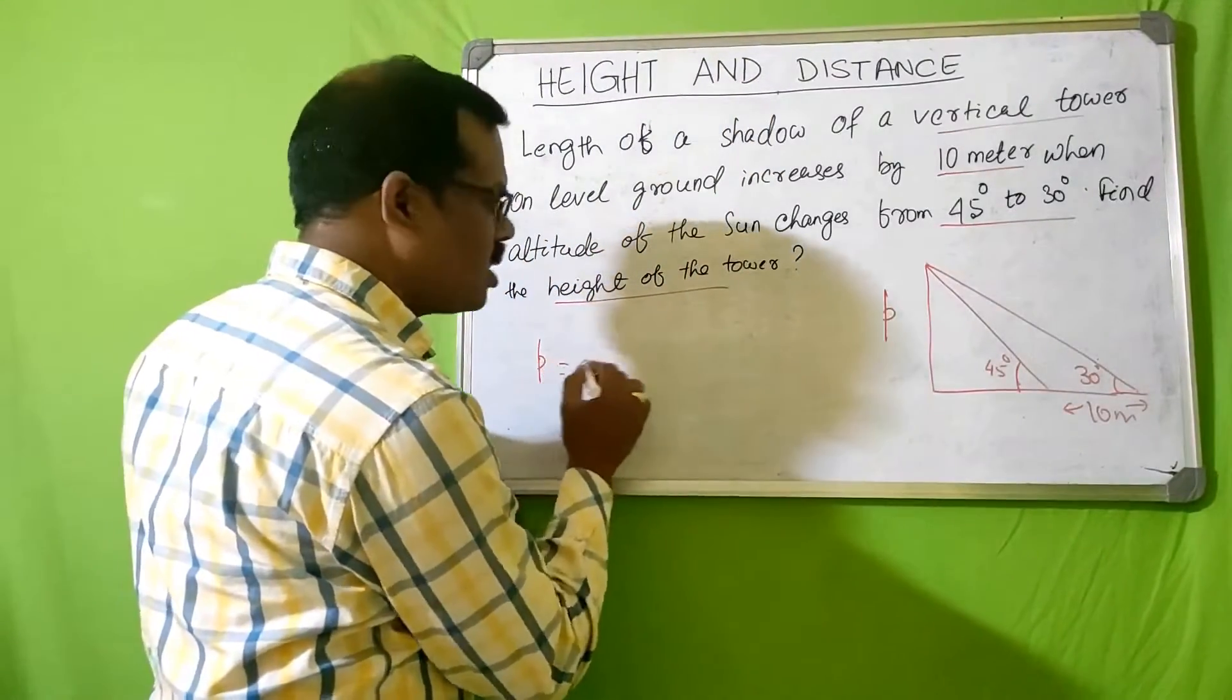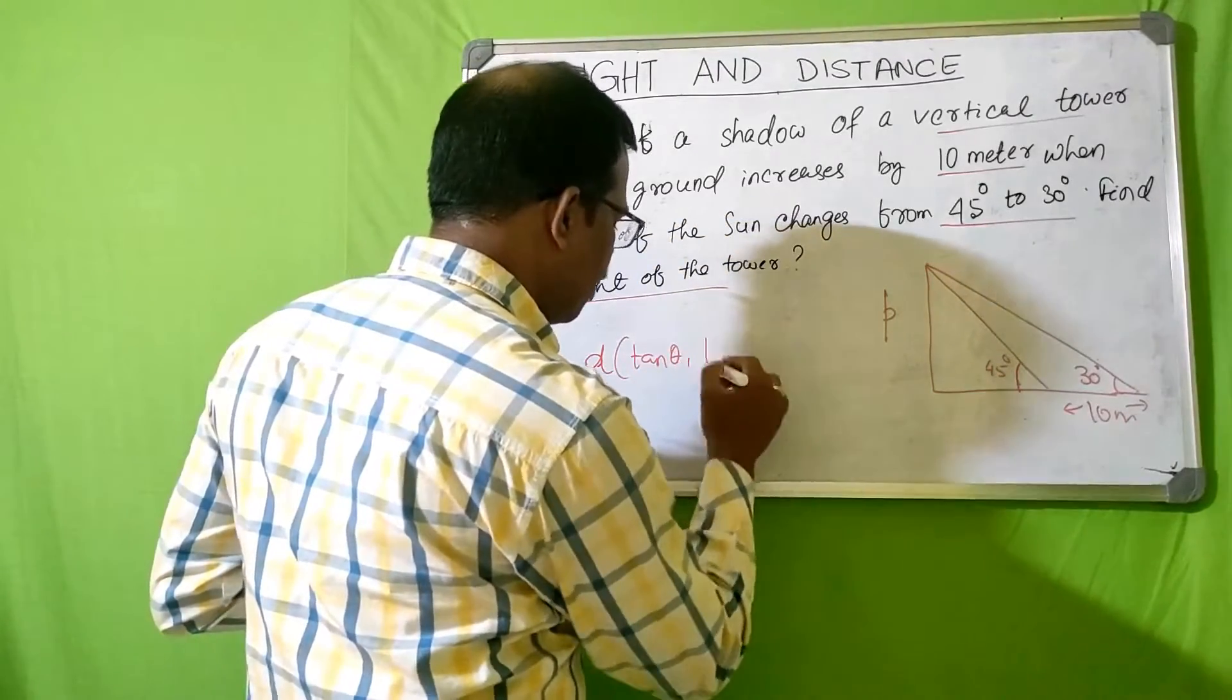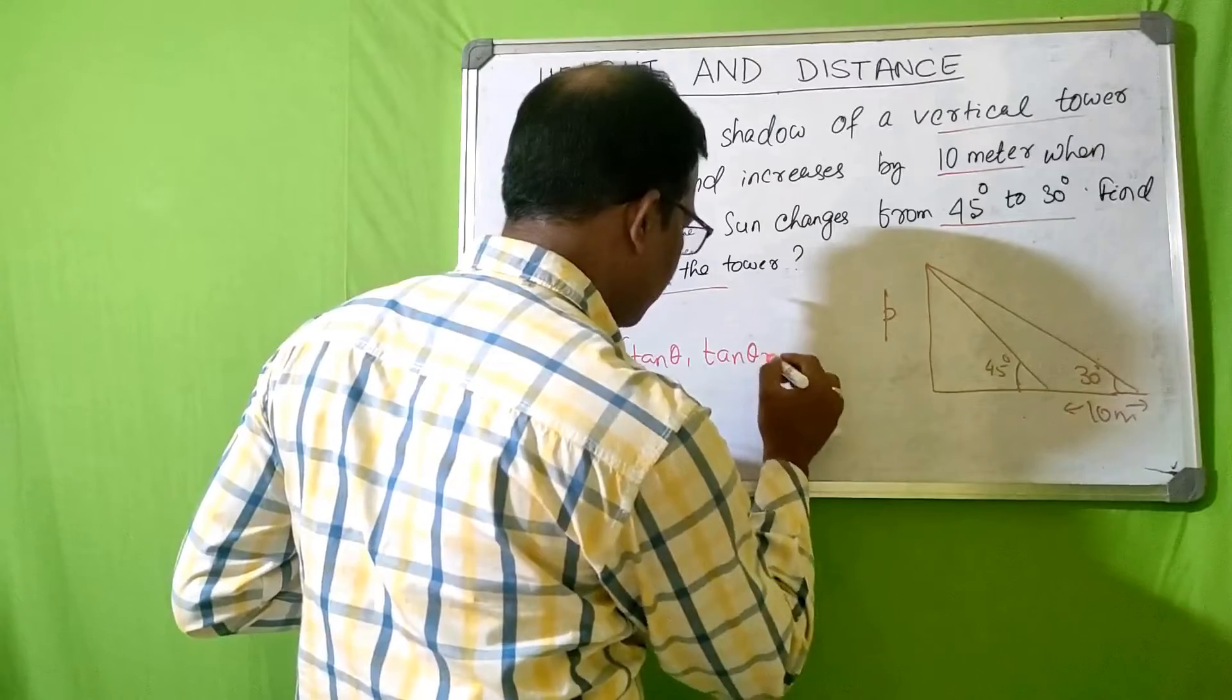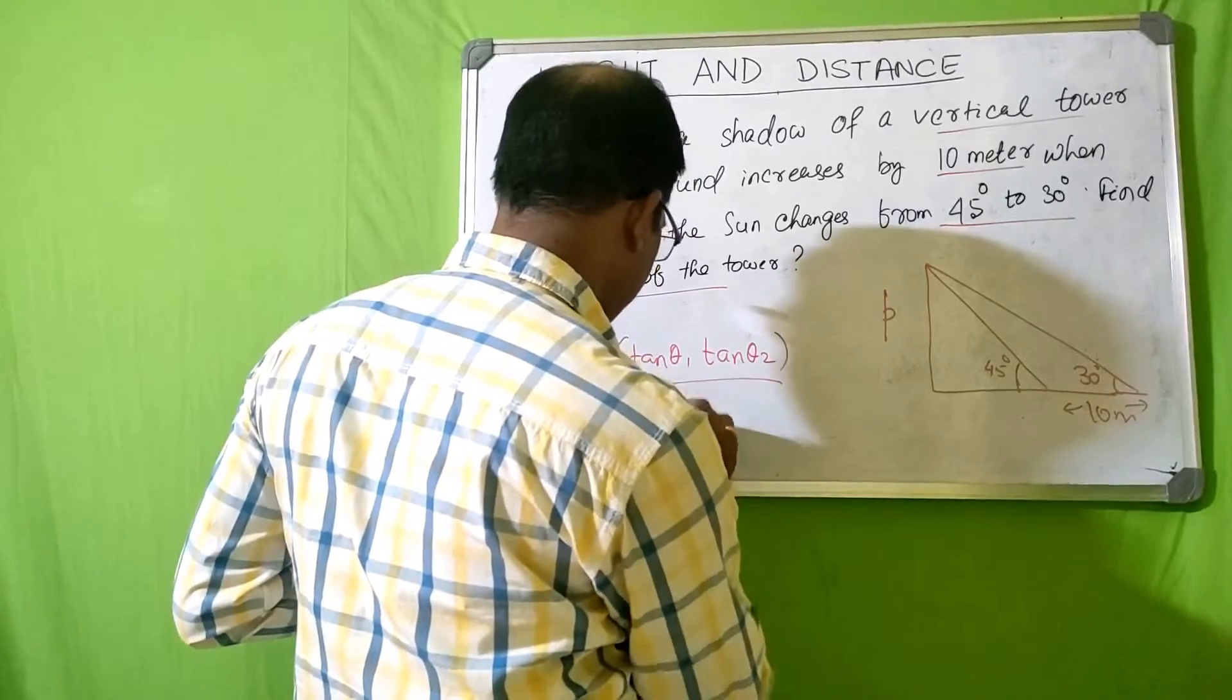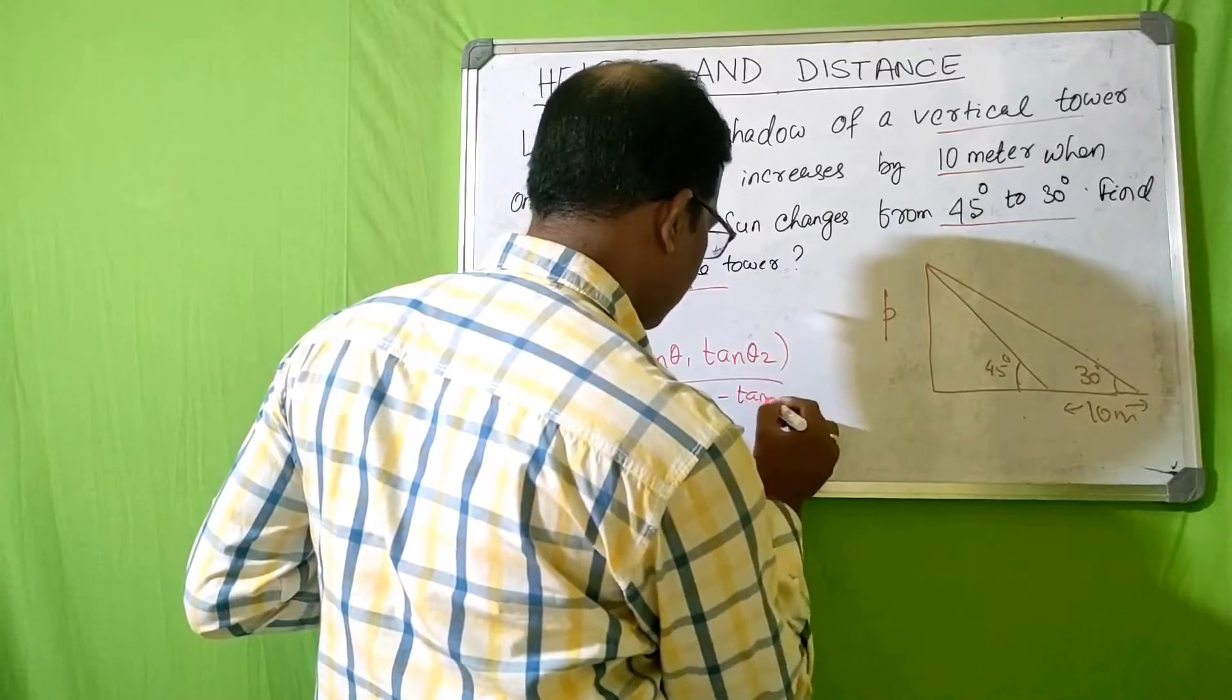So let's try to put our formula: p is equal to d into tan of theta one into tan of theta two divided by tan of theta one minus tan of theta two.